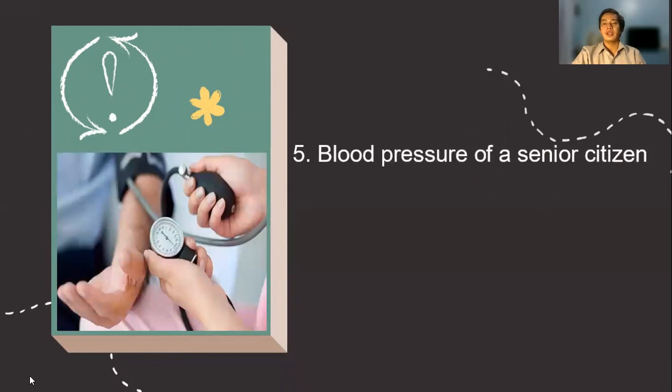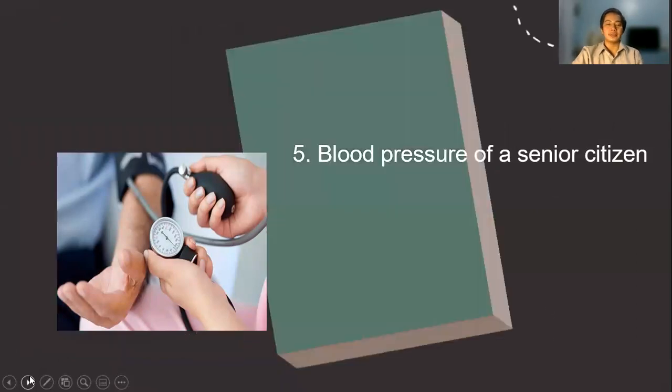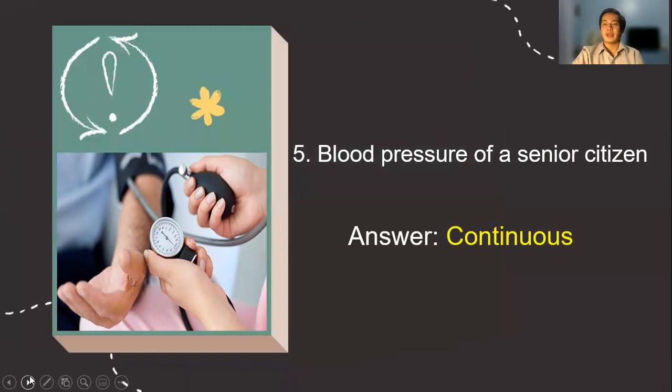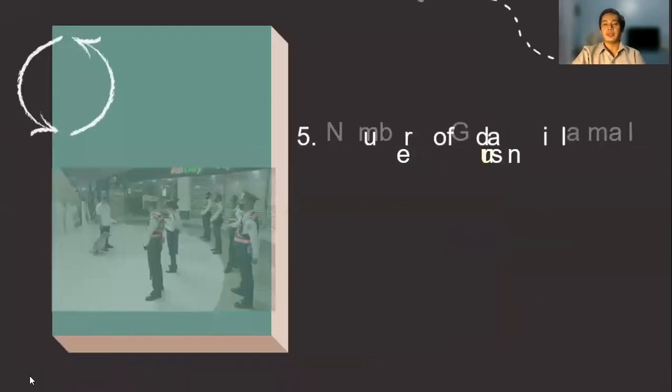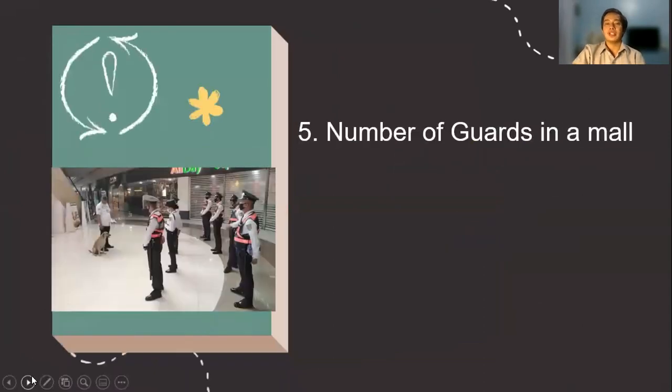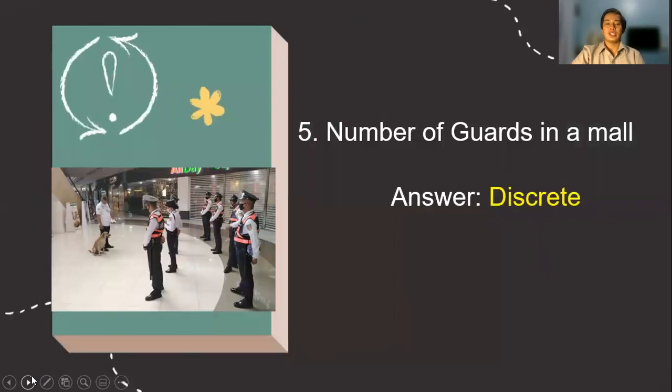Number five, the blood pressure of a senior citizen. Is it a count data or measured data? Very good. The answer is continuous. Number six, the number of guards in a mall. So again, very good. Obviously, the answer is discrete.